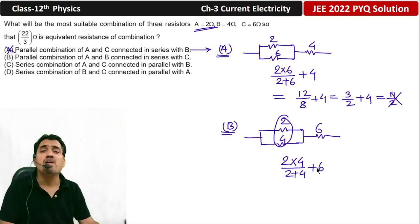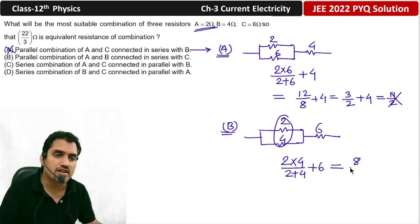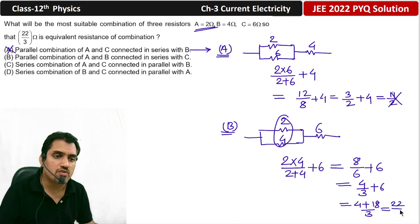It will be 8 divided by 6 plus 6, so this will be 4 by 3 plus 6. So, if we solve this, 4 plus 18 by 3, that is equal to 22 by 3.